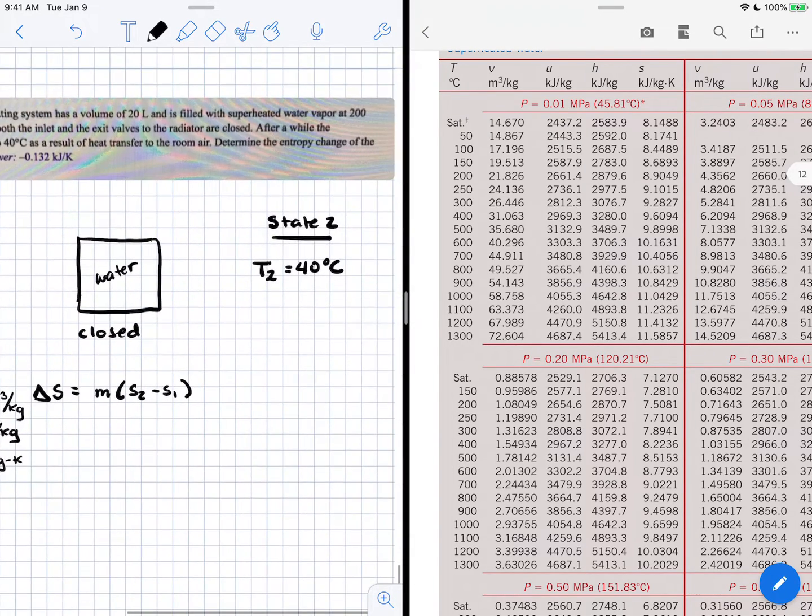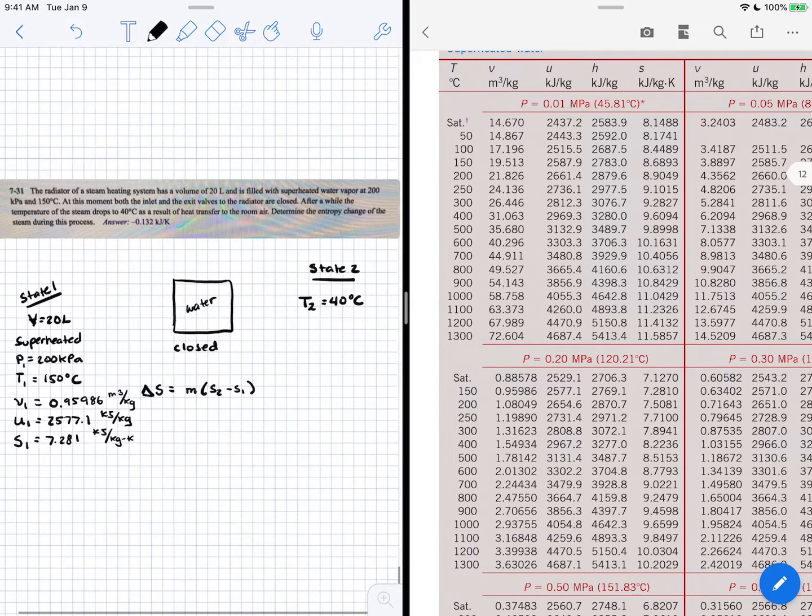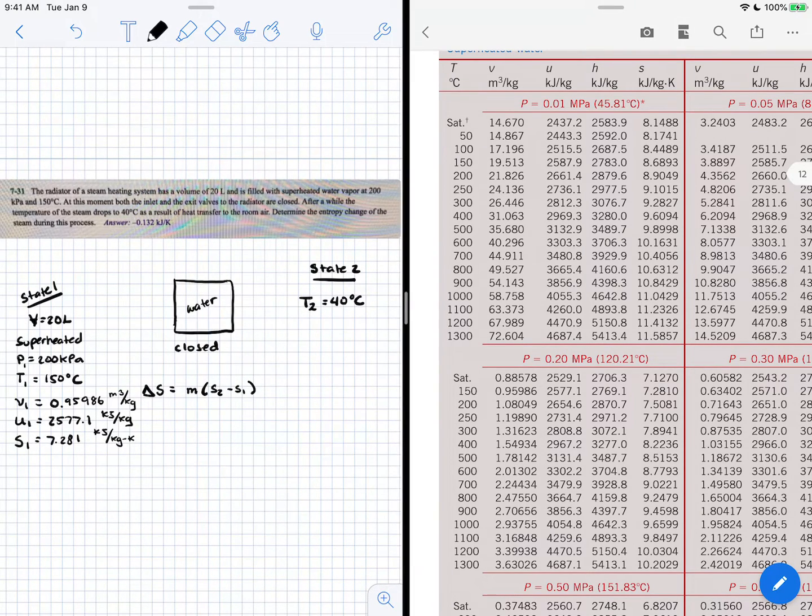Now at state 2, we don't have enough information right now to solve for the properties. Remember the state postulate says we need at least two independent properties to identify ourselves thermodynamically.